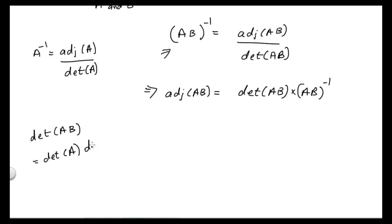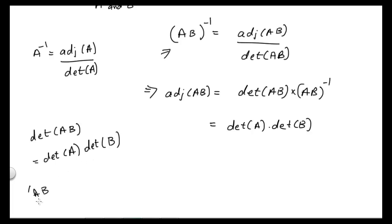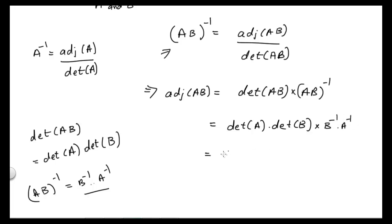Now we have a property which states that determinant of AB is equal to determinant of A times determinant of B. So I will replace determinant of AB with determinant of A times determinant of B. We also have another property which is AB inverse is equal to B inverse times A inverse, so I will replace AB inverse by B inverse times A inverse.